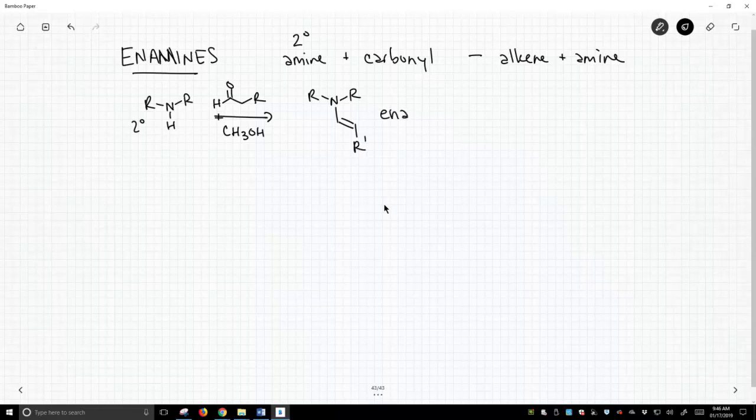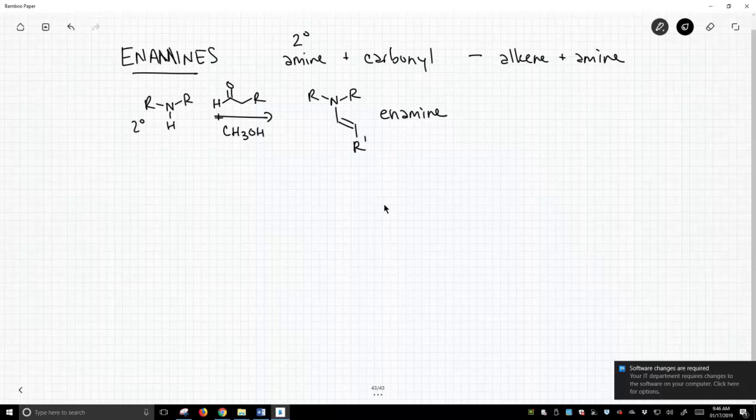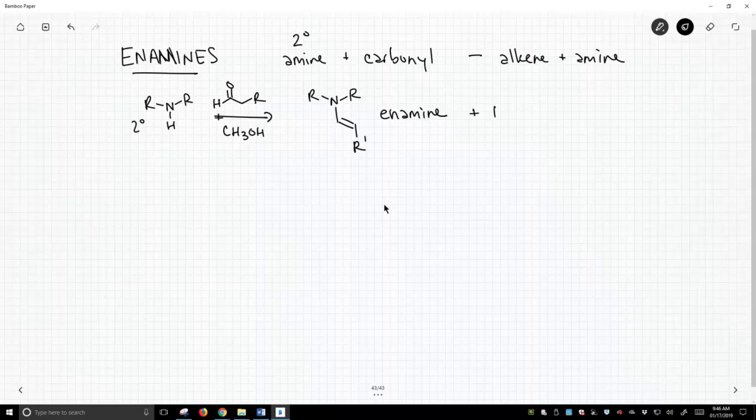This is our enamine. So you can see, it contains an alkene and an amine. Call it an enamine. And the side product is water.